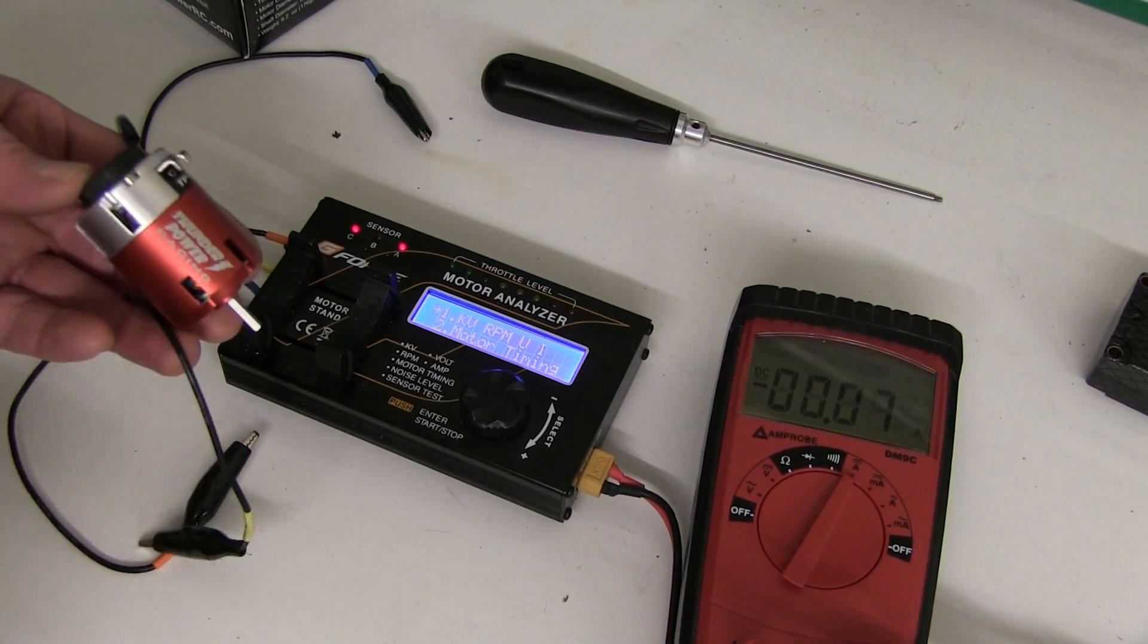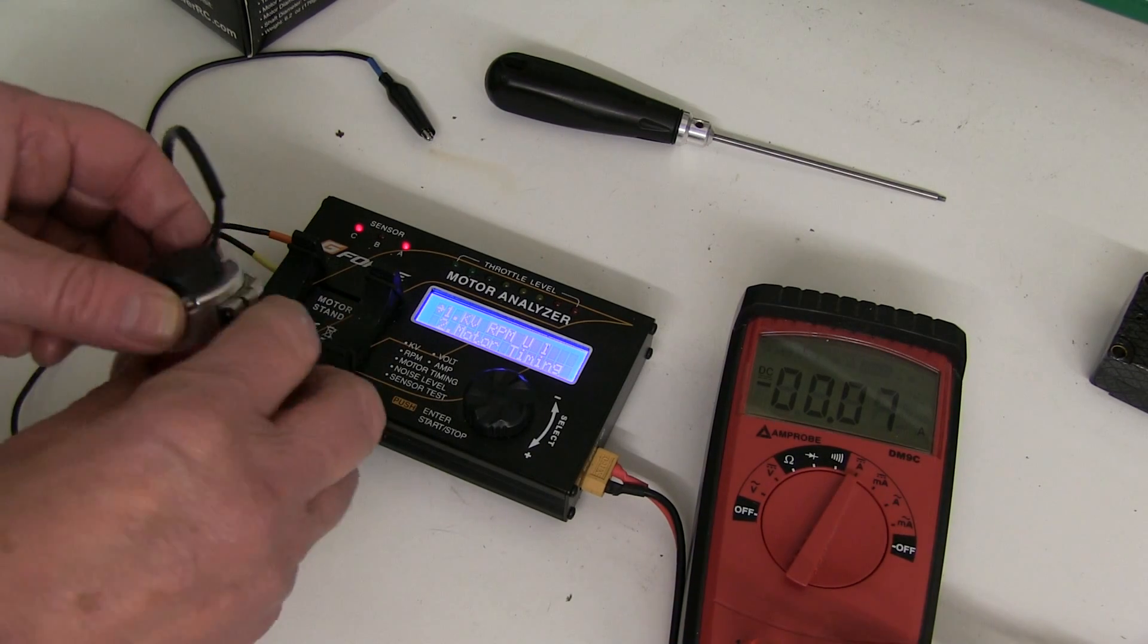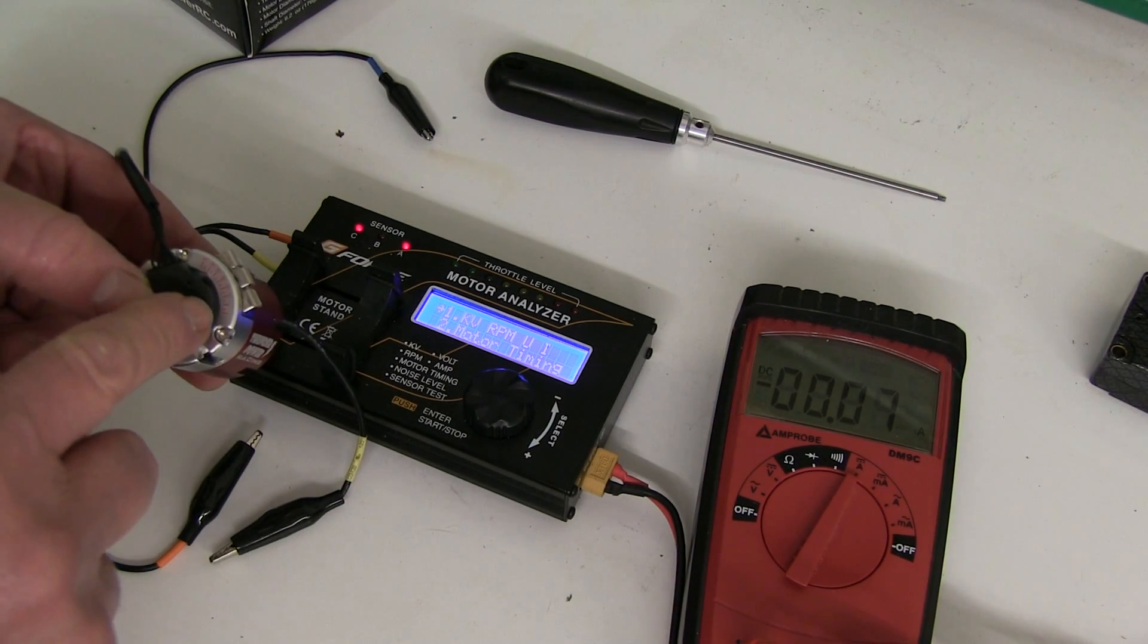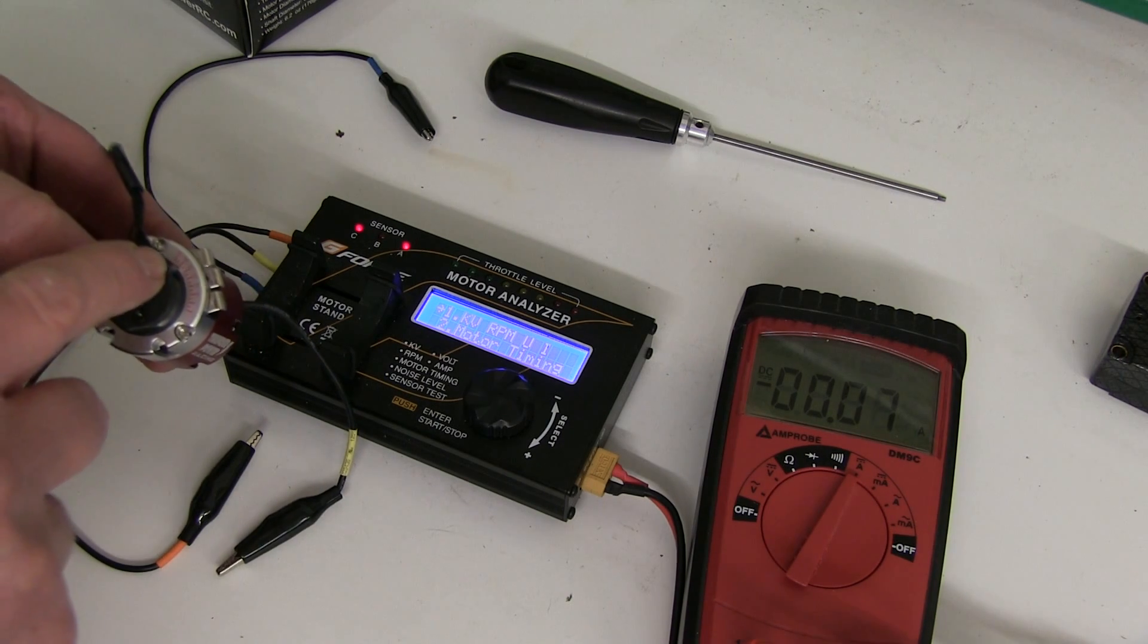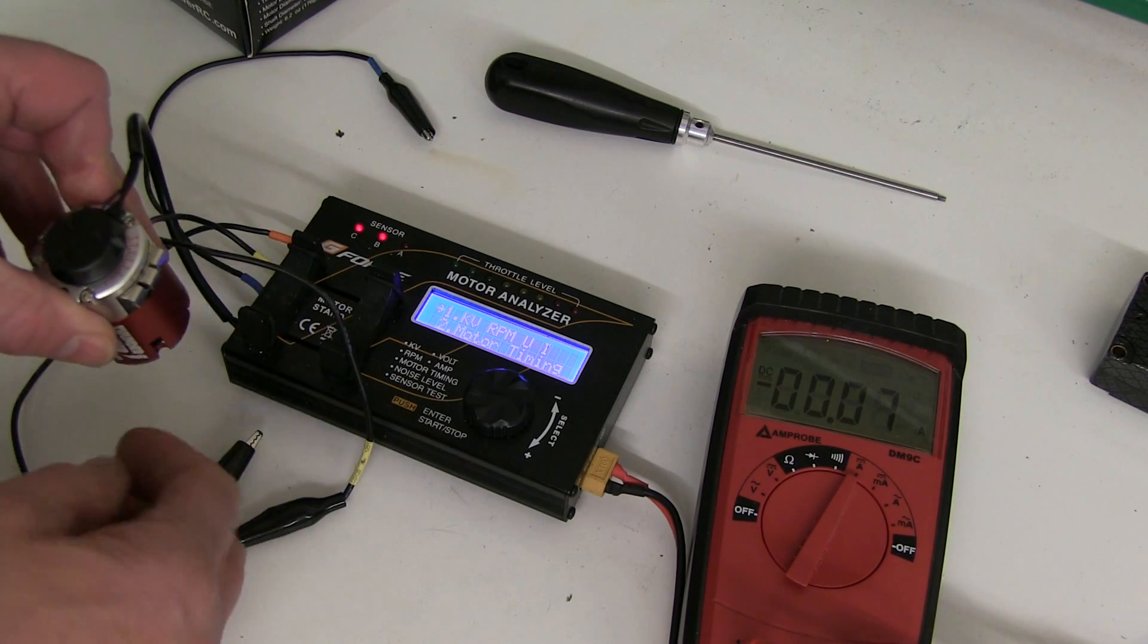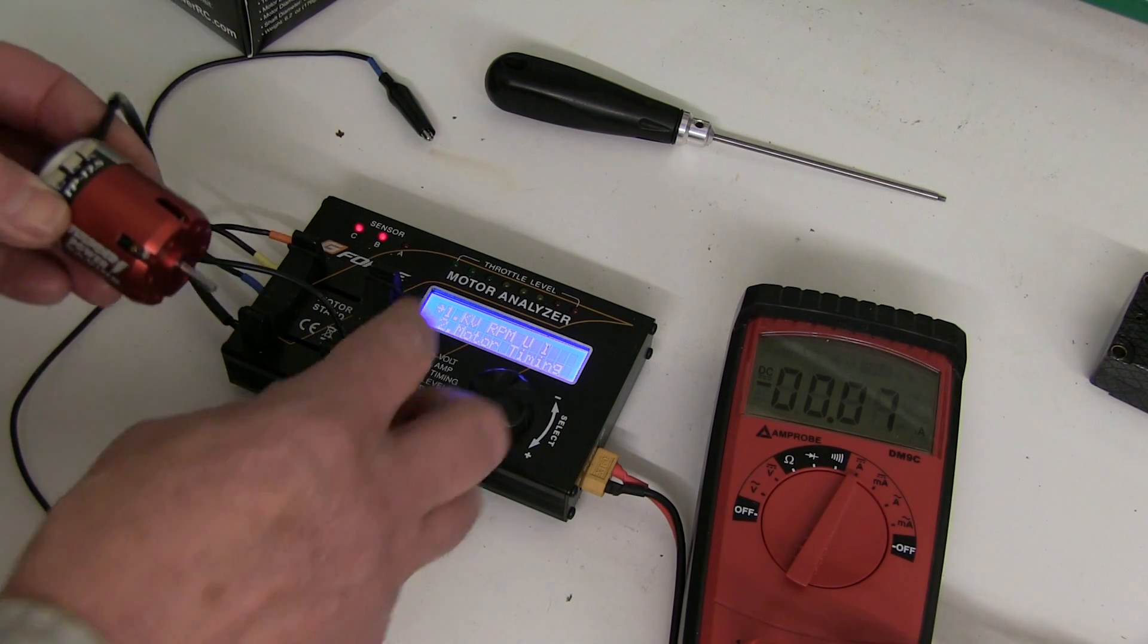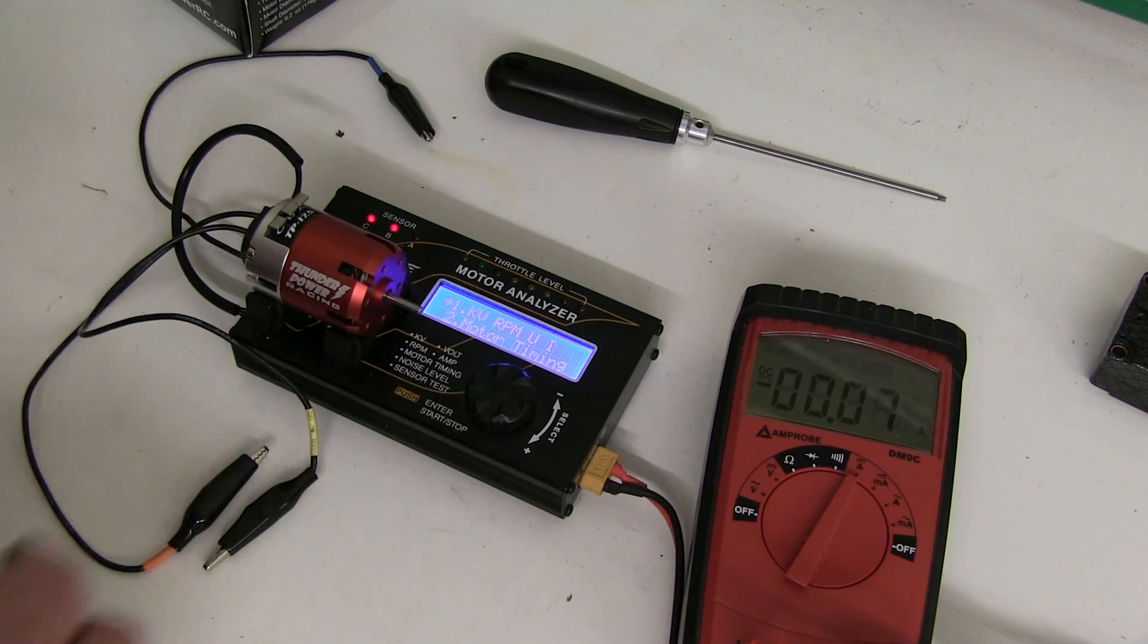Here's another one, a Thunder Power 17.5 turn. The endbell is graduated from 0 to 50. But how to set it, do you just turn it up to maximum and hope for the best? Well let's put it on here and see what readings we get.